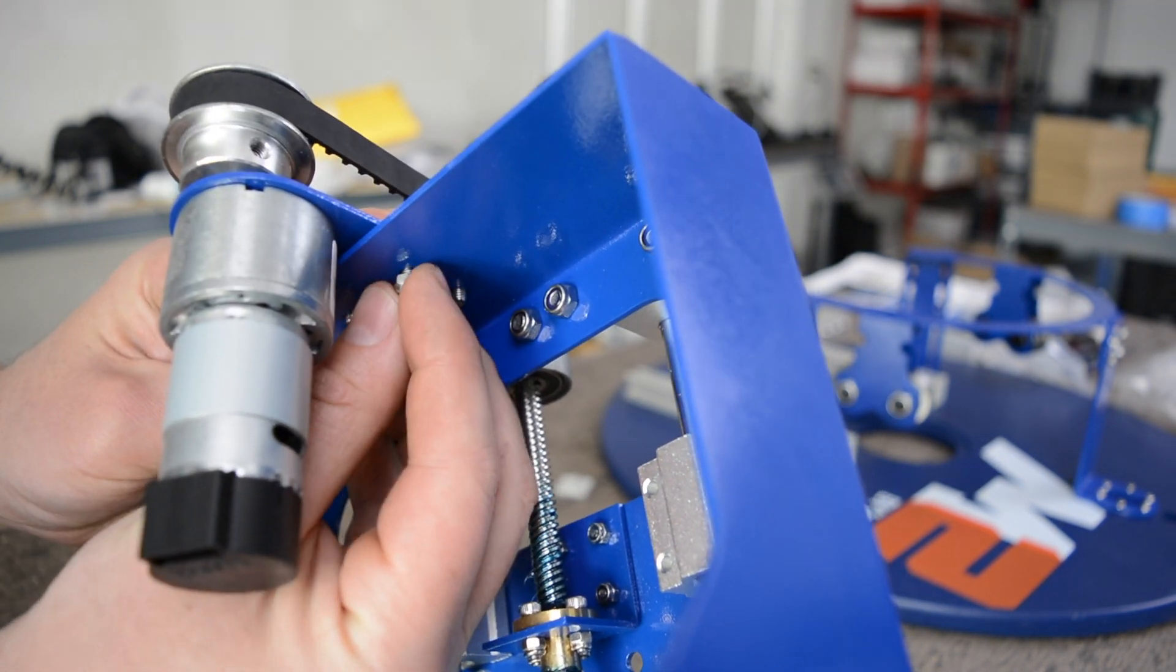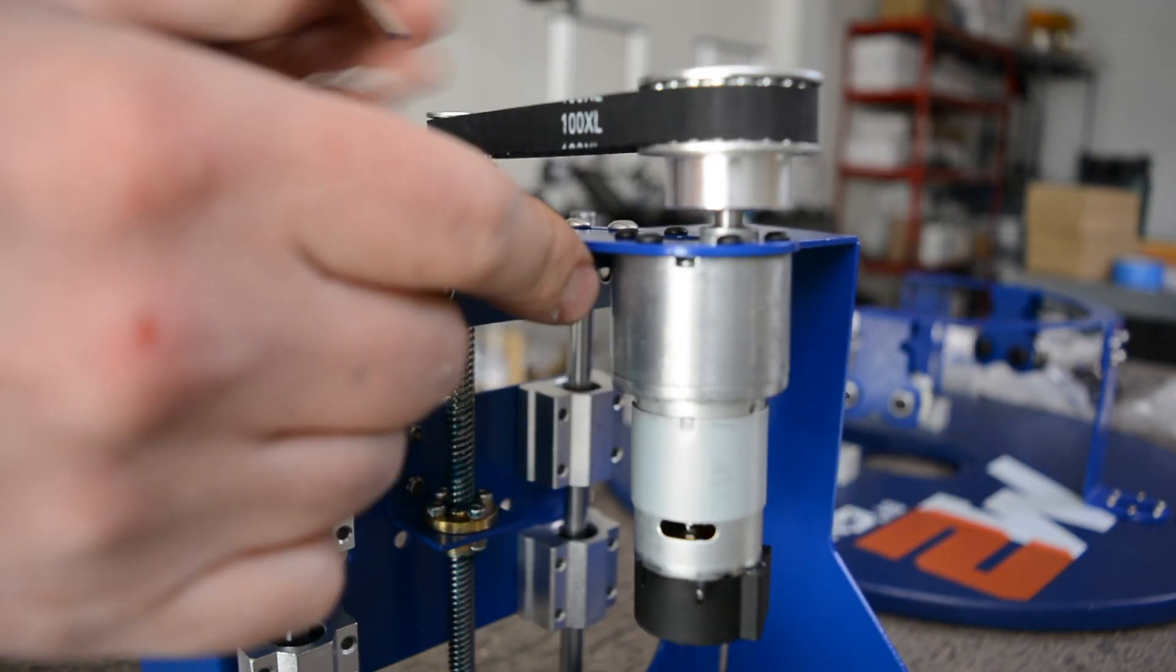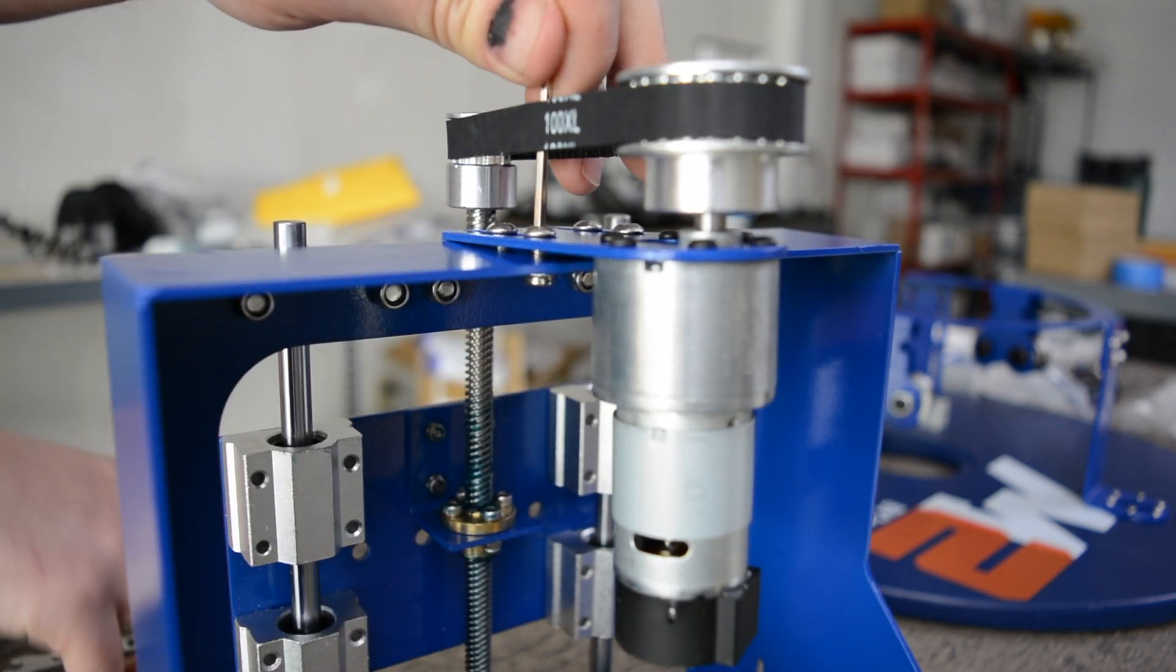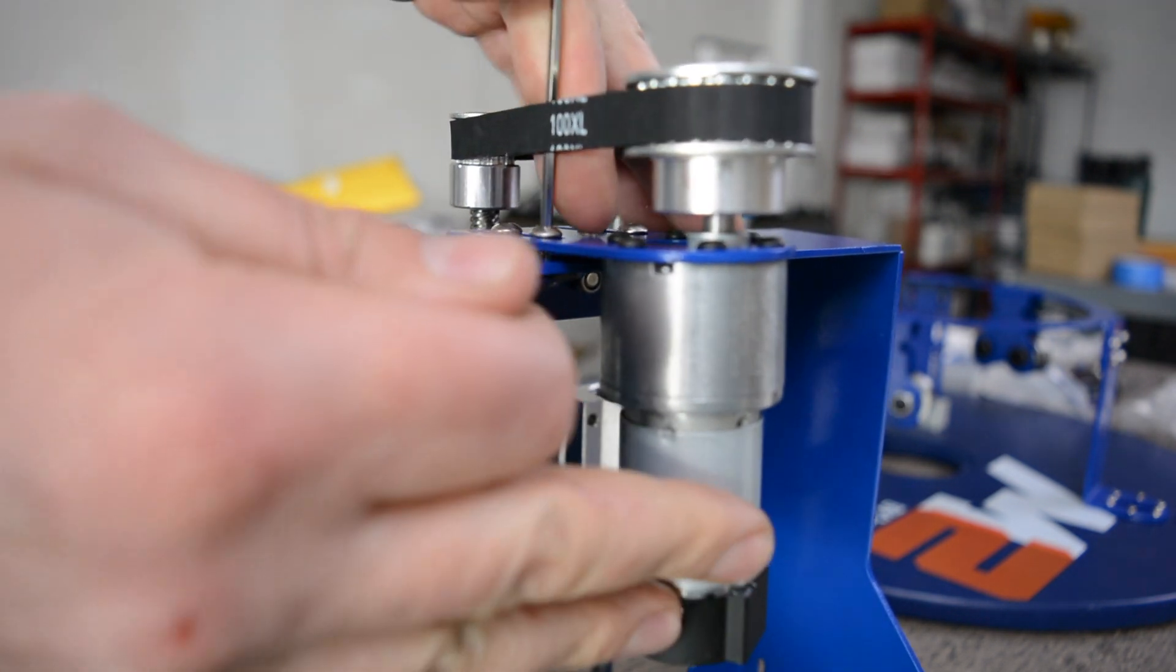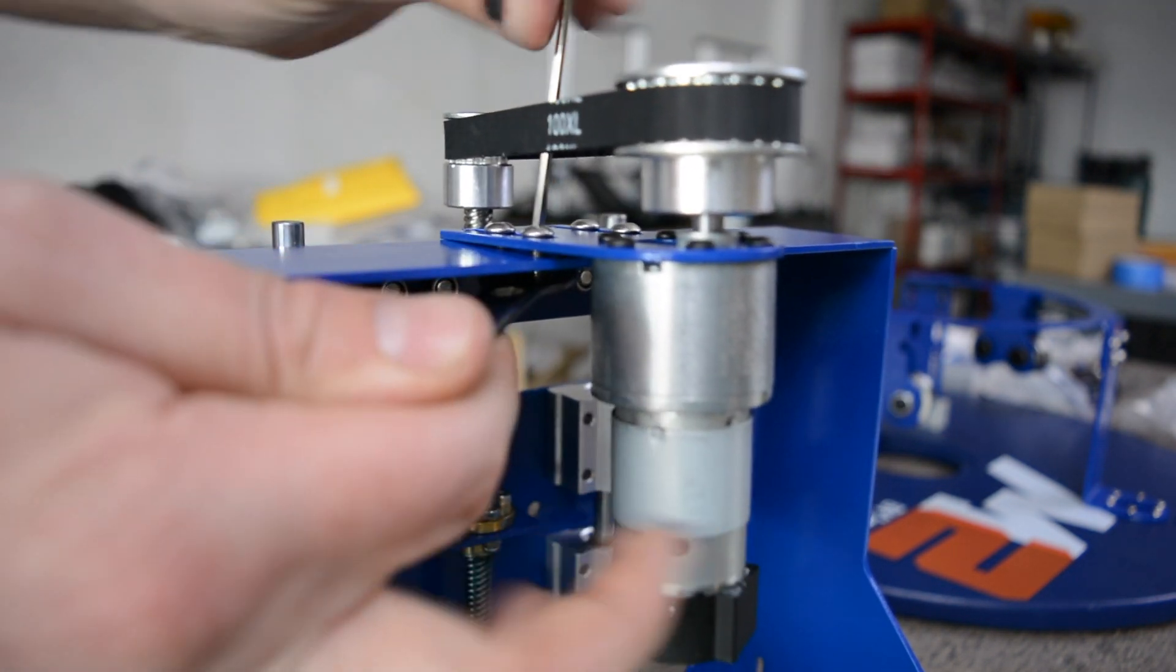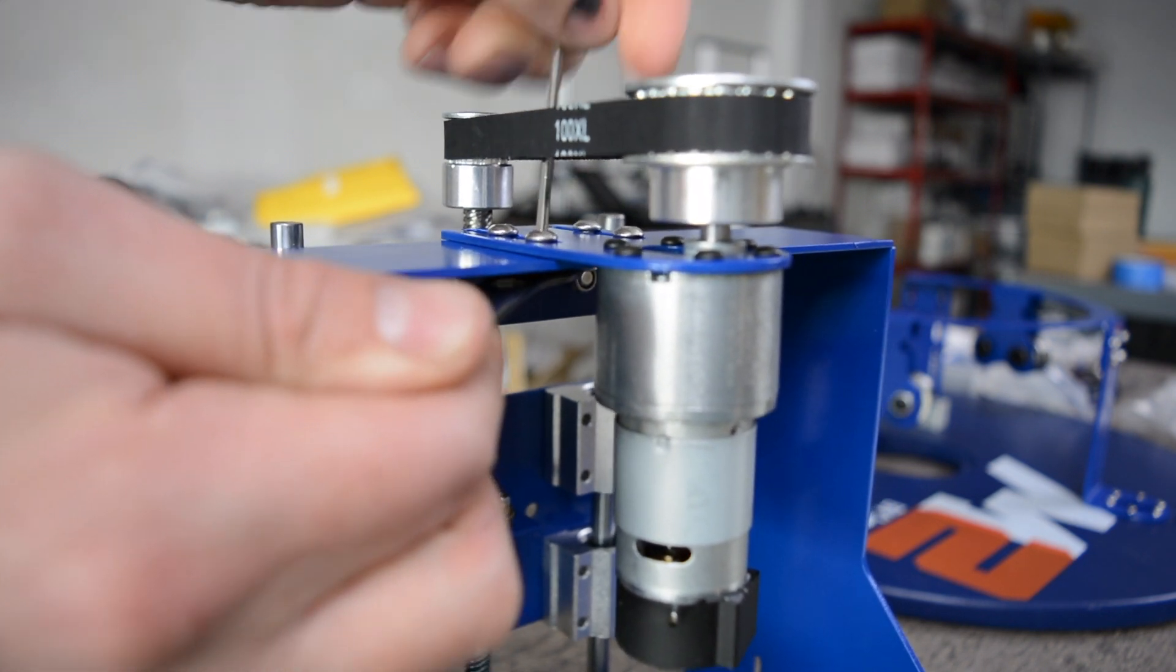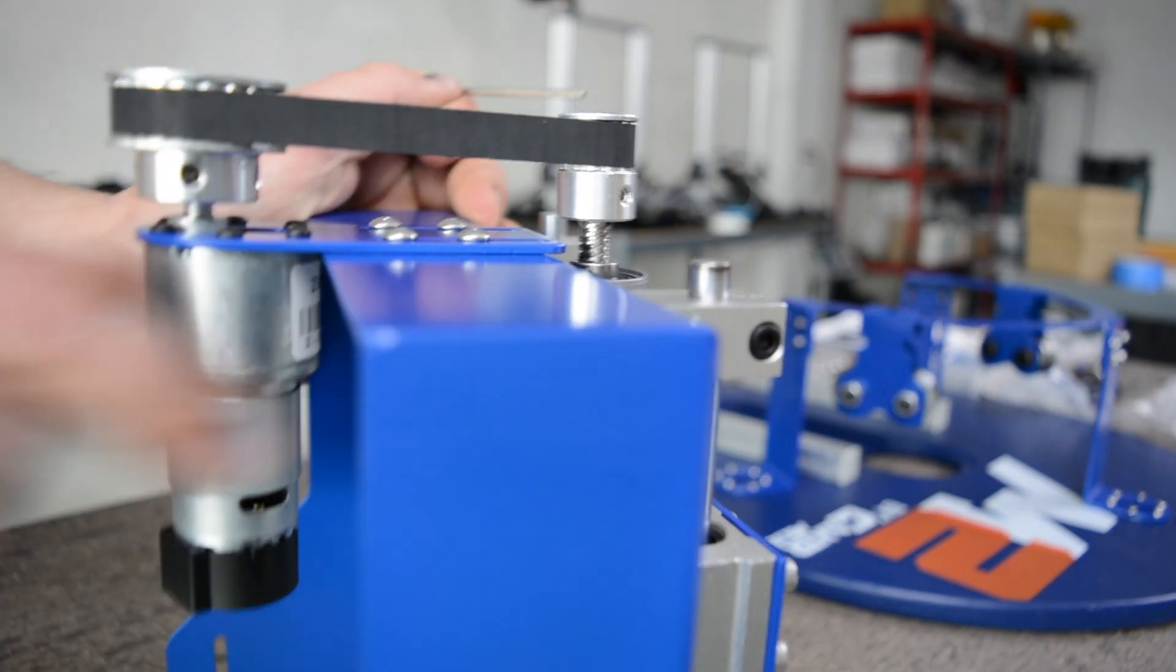Once those are hand tight we are going to use the 2.5 millimeter hex wrench again and that flat wrench to hold the nut in place and then spin with the allen on top and that allen or hex wrench will tighten the bolt. We're going to tighten each one of those all the way down until that bracket is flat against the top of the z-axis assembly.